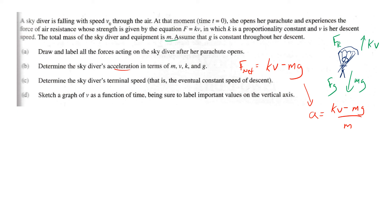Determine the skydiver's terminal speed. At terminal speed she stops accelerating, so kv equals mg. Solving for v: terminal speed equals mg over k. This makes physical sense — if kv is too small, mg accelerates her, increasing v, which increases the air resistance force until equilibrium is reached.